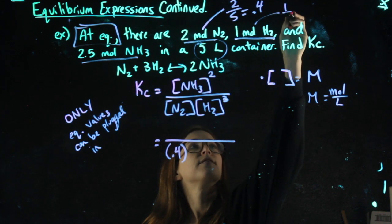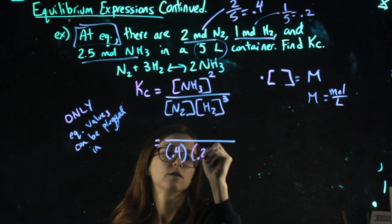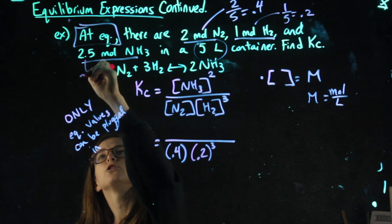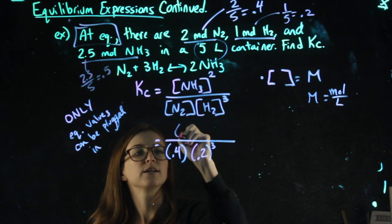H2, one divided by five, gets me 0.2. That's going to be cubed. And 2.5 divided by five gets me 0.5 for the NH3.